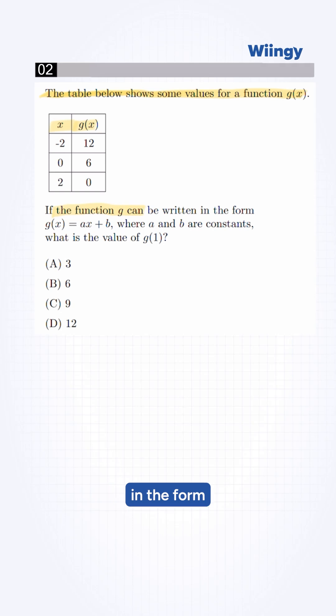If the function g can be written in the form g of x equal to ax plus b, where a and b are the constants, then what is the value of g of x?